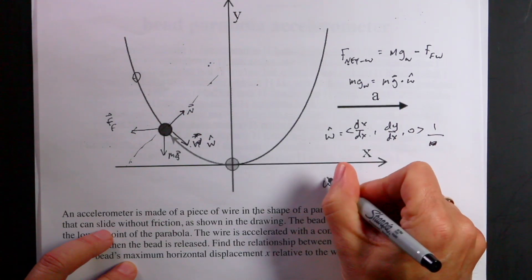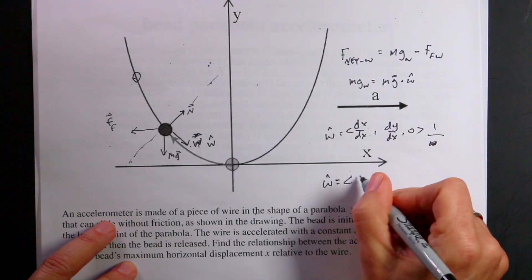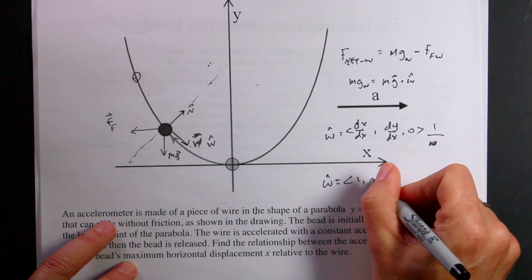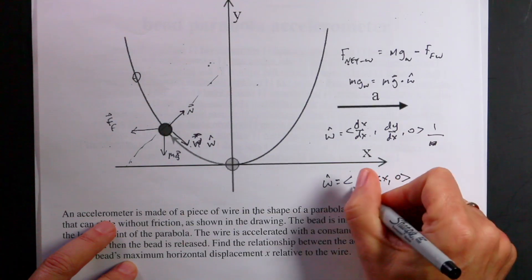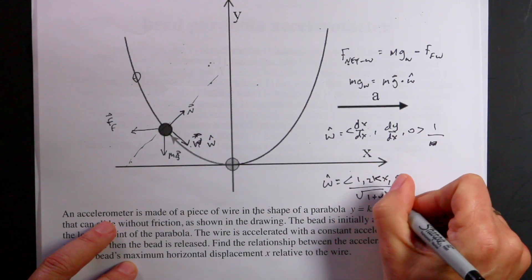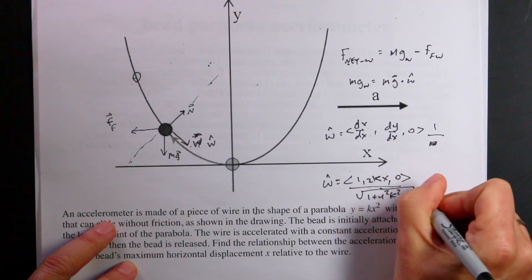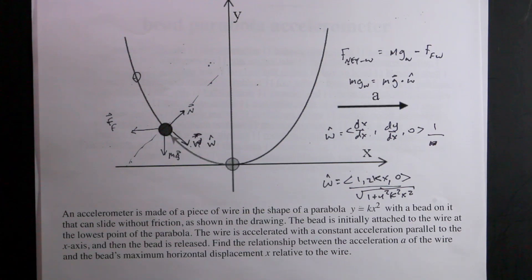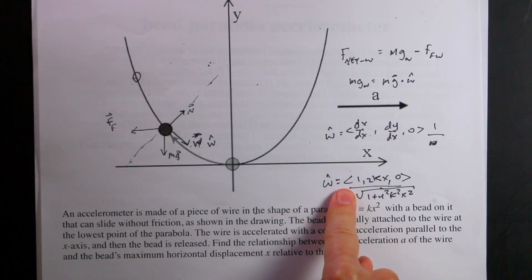So W hat is going to be equal to the derivative of X with respect to X in the X direction. The derivative of Y with respect to X in the Y direction zero. So this should be divided by the magnitude of that. So W hat is going to be equal to one. And then DY DX is going to be two K X zero, but then I have to divide by the square root of one plus four squared K squared X squared. That'd be my W hat, which is a lot like what I did with the N hat. So that's going to be my W hat. I'm going to use that and find the forces in the W hat direction.